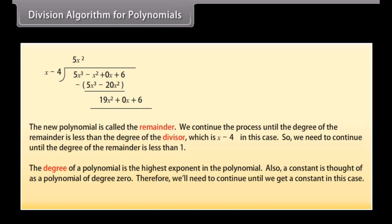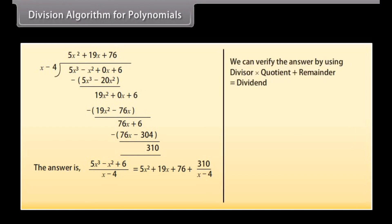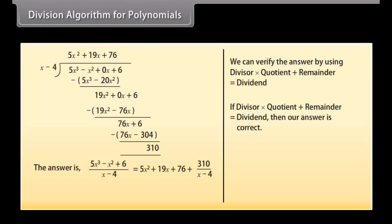The degree of a polynomial is the highest exponent in the polynomial. A constant is considered a polynomial of degree 0. Therefore, we continue until we get a constant remainder. The answer is: 5x cubed minus x squared plus 6, divided by x minus 4, equals 5x squared plus 19x plus 76 plus 310 upon x minus 4. We can verify the answer using: divisor times quotient plus remainder equals dividend.